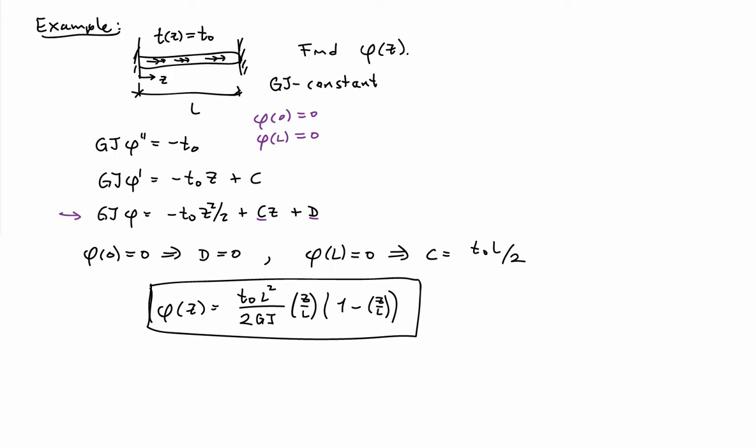I factored it in a way that allows me to see immediately that the two boundary conditions are satisfied. If I plug in Z equals 0, this is going to be 0. And if I plug in Z equals L, I'm also going to get 0. That was the reason for factoring it in this particular fashion.